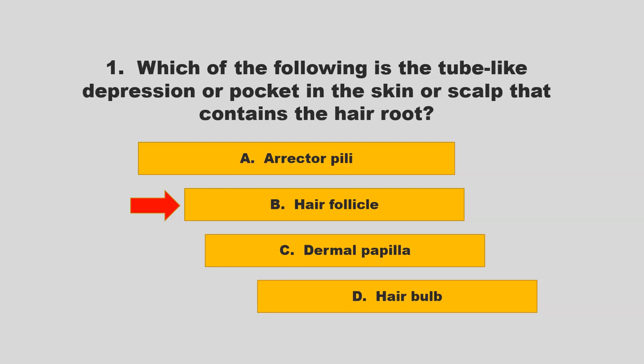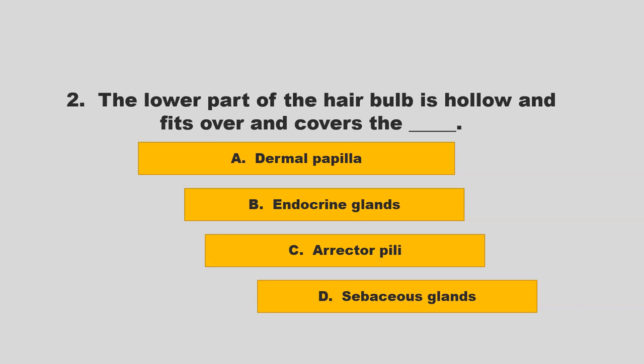The lower part of the hair bulb is hollow and fits over and covers the blank. Is it dermal papilla, endocrine glands, erector pili, or sebaceous glands? If you chose A, dermal papilla, you are correct.